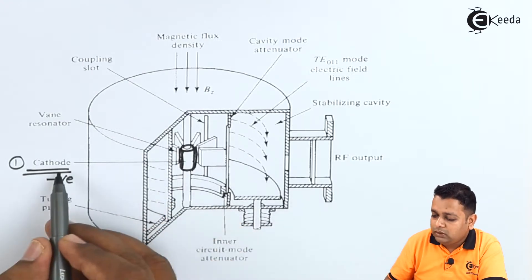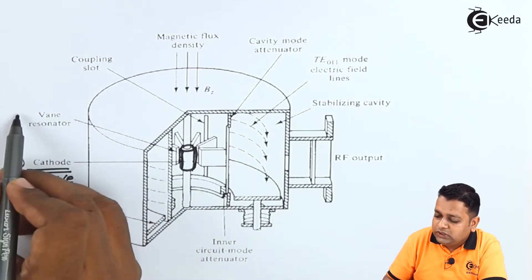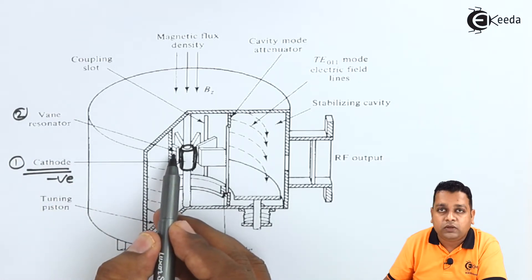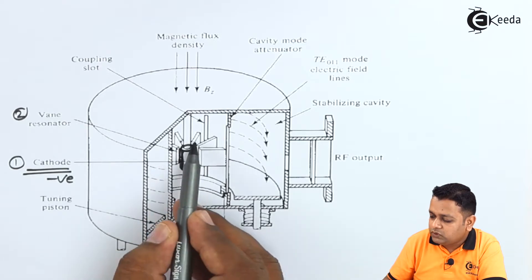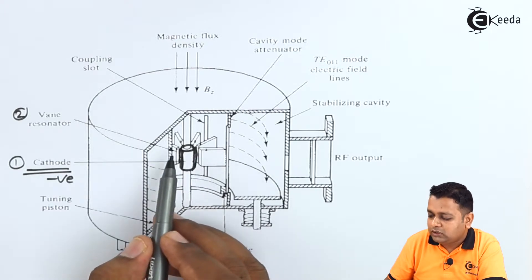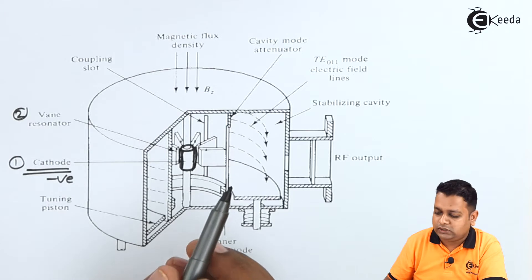Now after the cathode terminal, you must look at the vane resonator which is a part of anode that we have shown in the previous diagram also. So you see these slots. So these slots belong to the anode structure. So the resonant cavities are associated and that are separated with mean distance also.